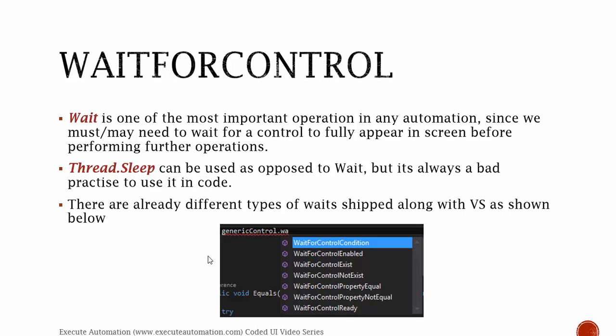Waiting is one of the most important operations in any automation, since we must, or may need to, wait for a control to fully appear on screen before performing further operations. Thread.sleep can be used, but it's always a bad practice. Thread.sleep will always put your execution in a very bad shape, since even if the control appears, you are forcibly telling your code to wait for a certain time. You need to write some mechanism to wait for a control to appear, to be enabled, or to exist, and then once it appears, not wait any further.